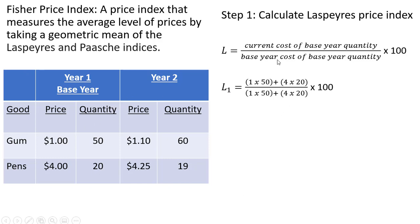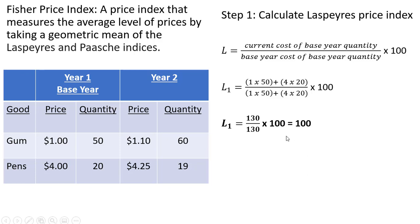And then the base year cost of this base year quantity is the same calculation: $1 times 50 plus $4 times 20 in the denominator. And we're going to get an index number of 100 in year one, or the base year.